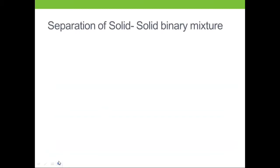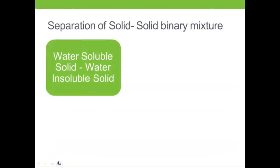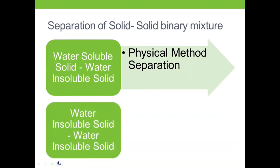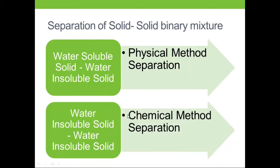Let us see how to separate a solid-solid binary mixture. If one of the components is water-soluble and the other is water-insoluble, the separation type is a physical method of separation. However, if both components are water-insoluble, separation is affected by a chemical method of separation. A physical method uses dissolution, whereas a chemical method involves a chemical reaction by addition of a reagent other than water.